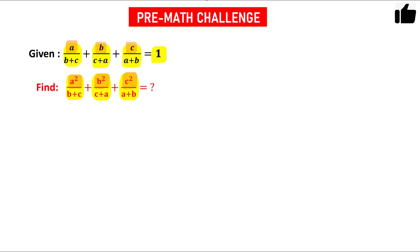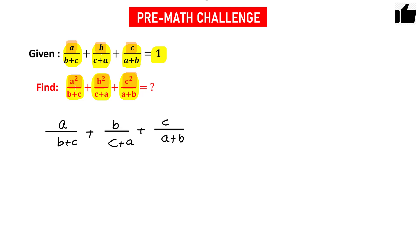Let us use this step. The condition given is a/(b+c) + b/(c+a) + c/(a+b) = 1. What I am going to do is multiply the left-hand side and right-hand side by (a+b+c).